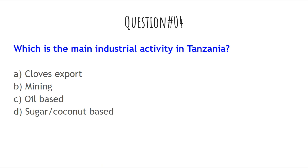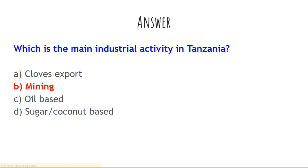The next question is: What is the main industrial activity in Tanzania? The options are: clubs, export, mining, oil-based, or sugar-based. The answer is mining — mining is the main industrial activity in Tanzania.